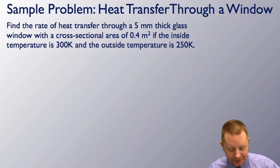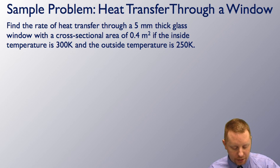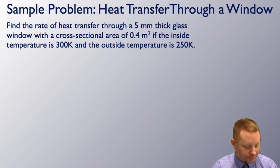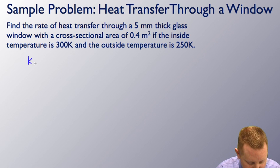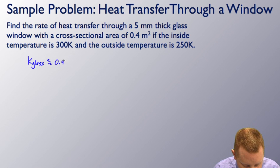Let's take a look and see how we would apply this. Here we're going to look at the rate of heat transfer through a window. Find the rate of heat transfer through a five millimeter thick glass window with a cross-sectional area of 0.4 square meters if the inside temperature is 300 Kelvin and the outside temperature is 250 Kelvin. Well the first thing we have to know is the thermal conductivity of glass, which we could look up, is going to be about 0.9.